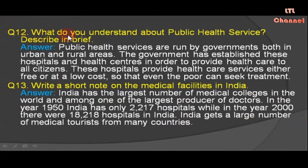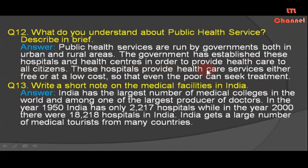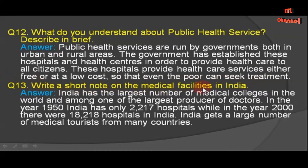Question number twelve: What do you understand about public health service? Answer: Public health services are run by governments both in urban and rural areas. The government has established these hospitals and health centers to provide health care to all citizens. These hospitals provide health care services either free or at a low cost so that even the poor can seek treatment.